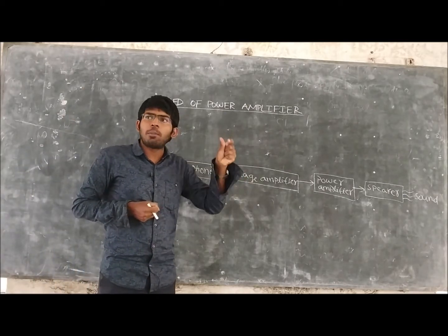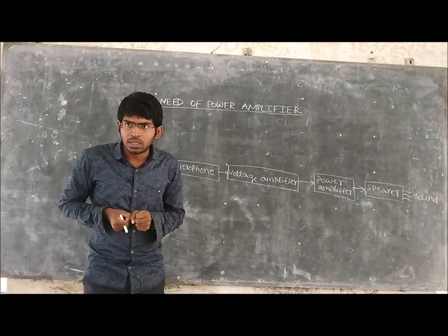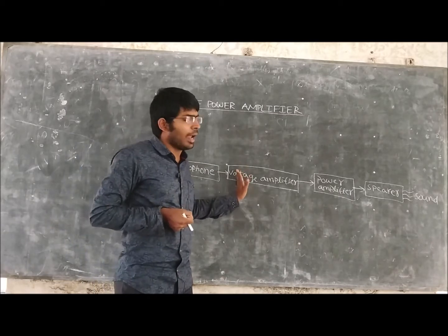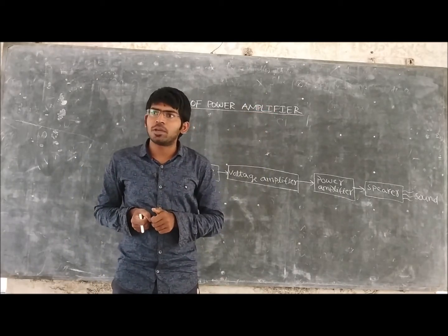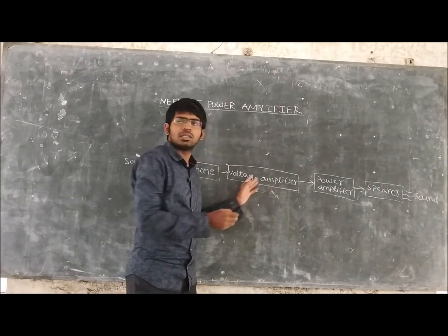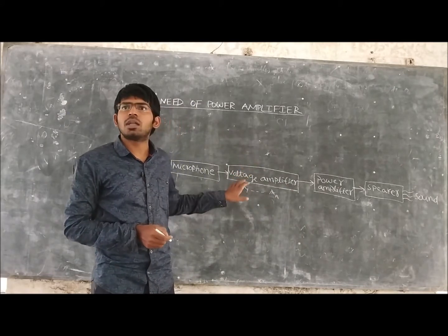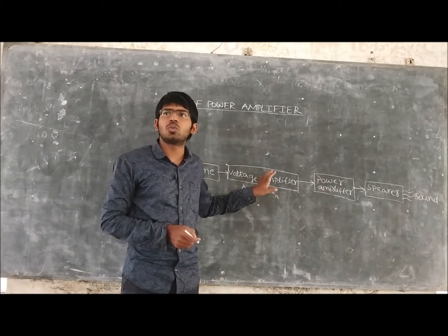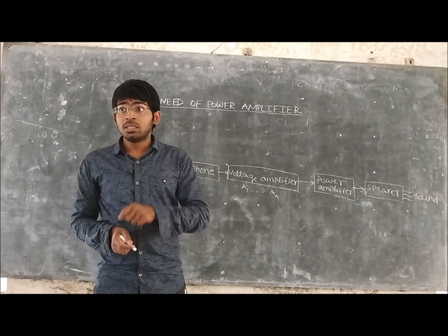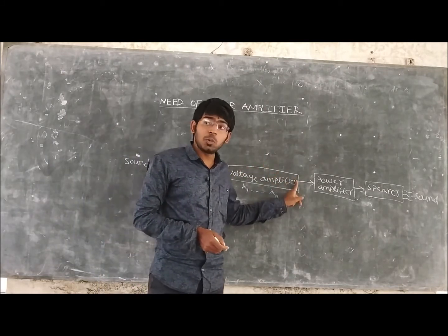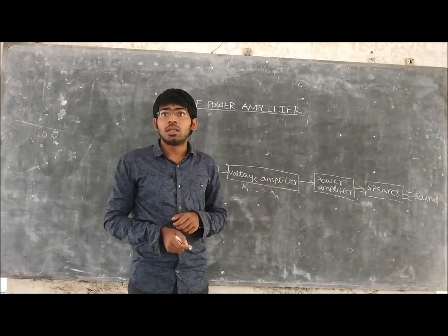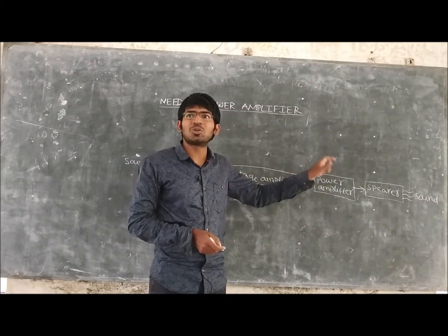Here we are using the voltage amplifier as the first stage. This does not mean we are using only a single voltage amplifier — we may use n number of voltage amplifiers for amplification. If the gain of the first amplifier is A1 and the last amplifier is An, then the total gain is A1 × A2 × ... × An. Now we have a voltage-amplified output, but still this output does not have the capability to turn on the speaker — this output power is not sufficient to turn on the speaker.